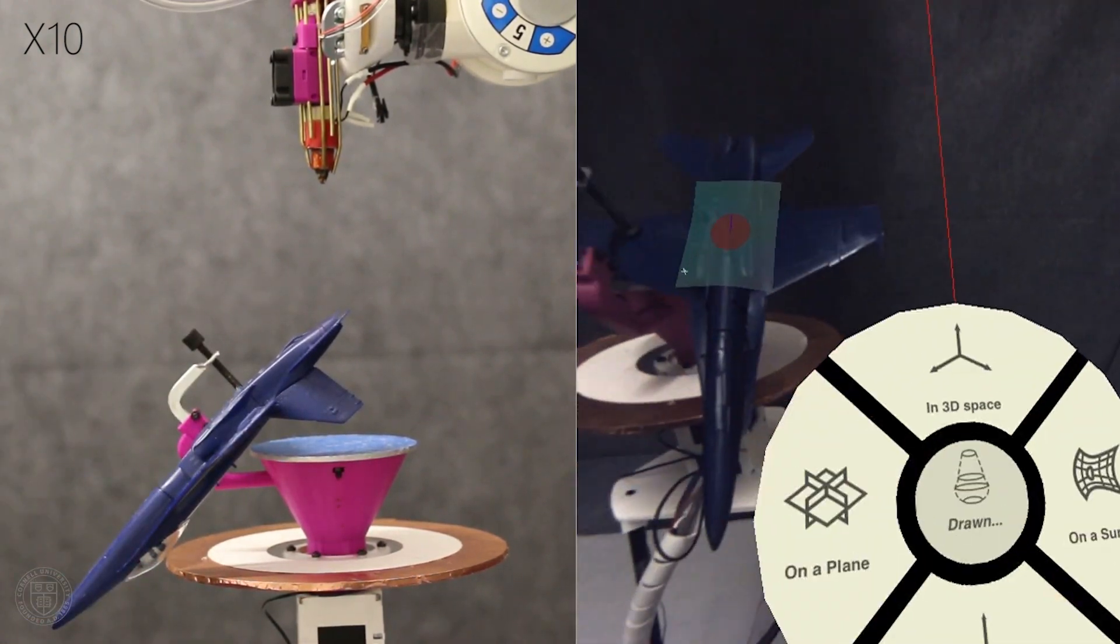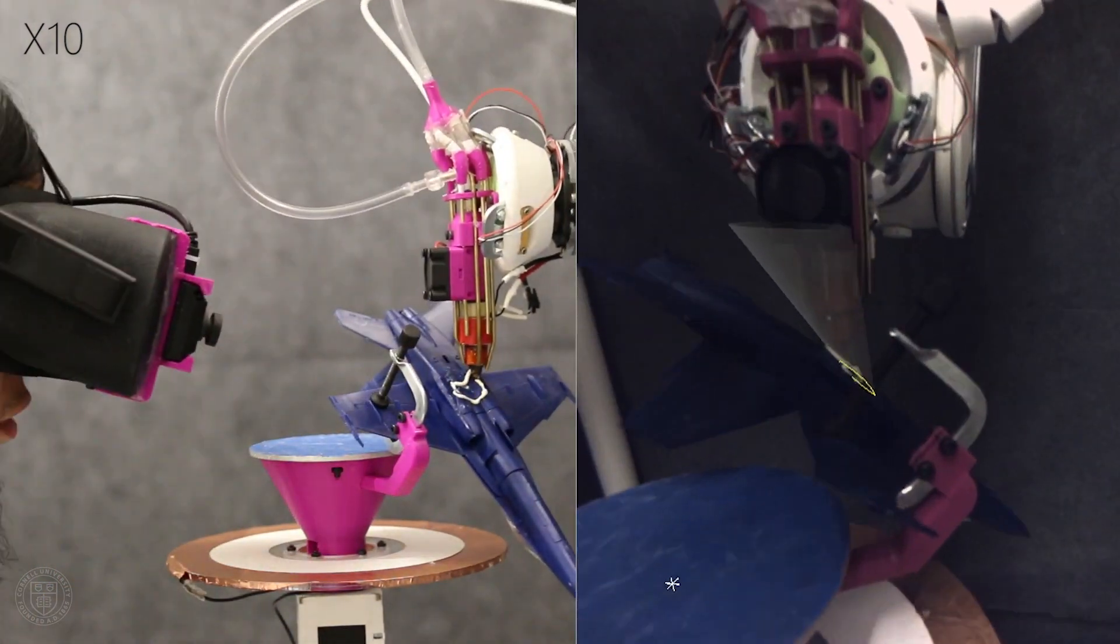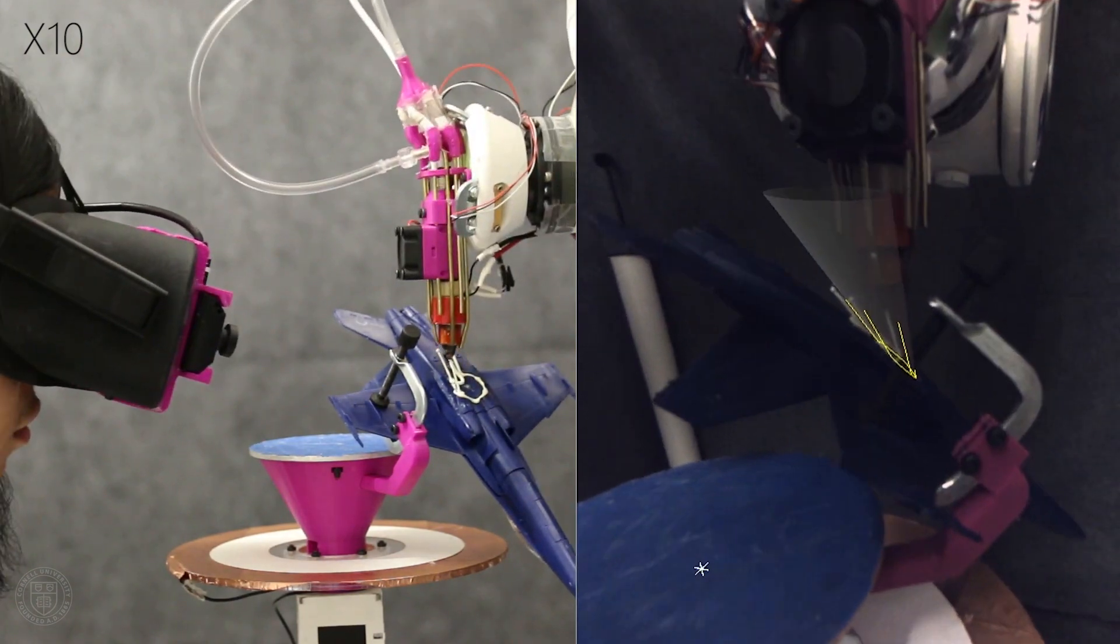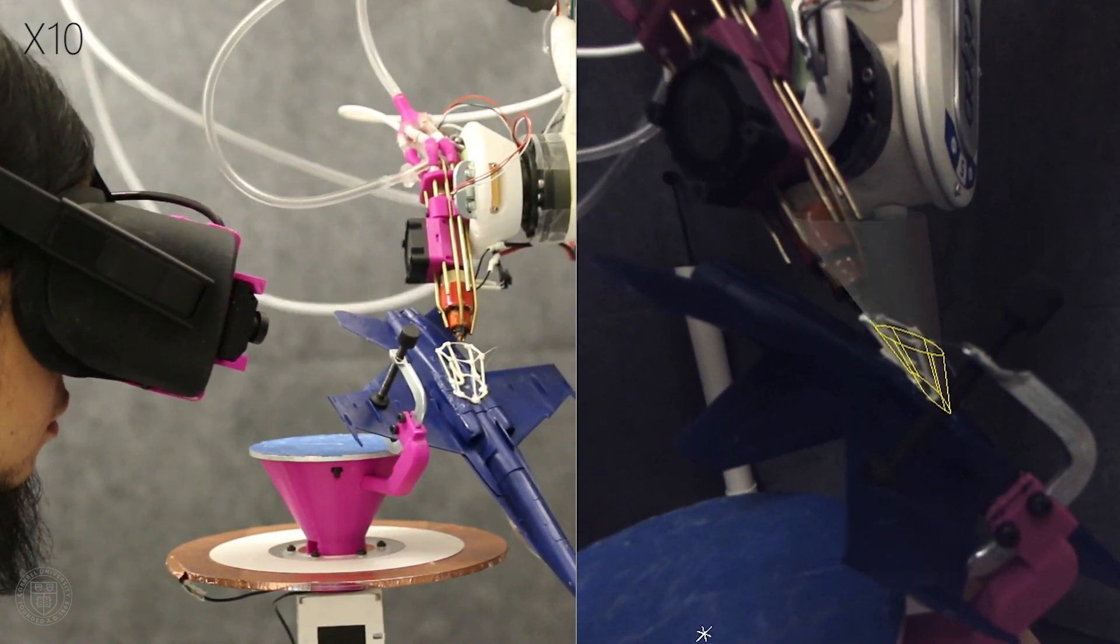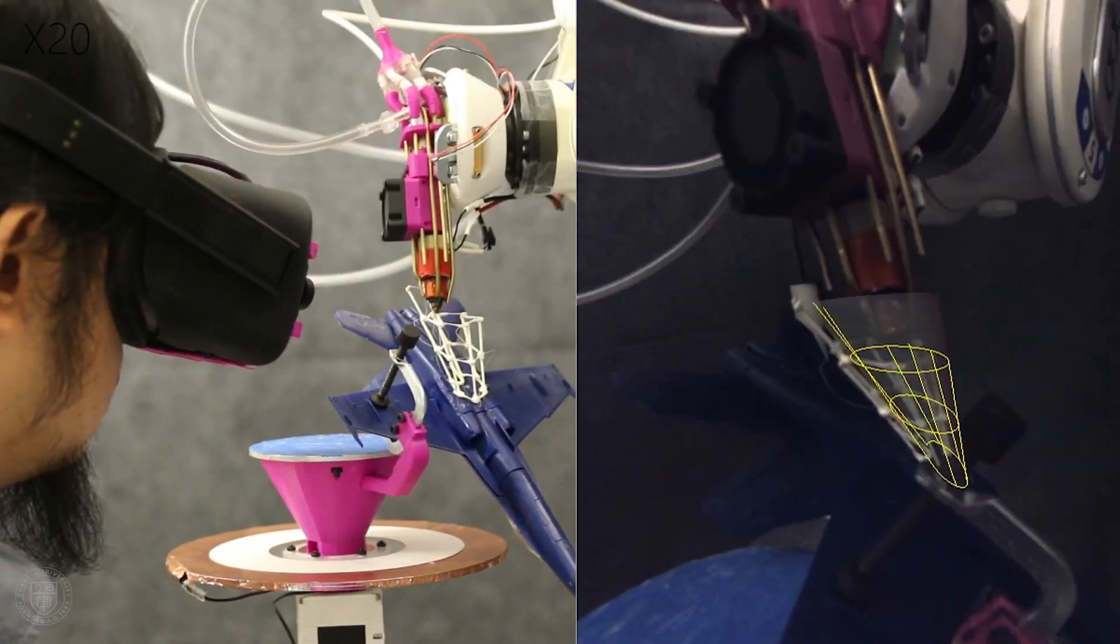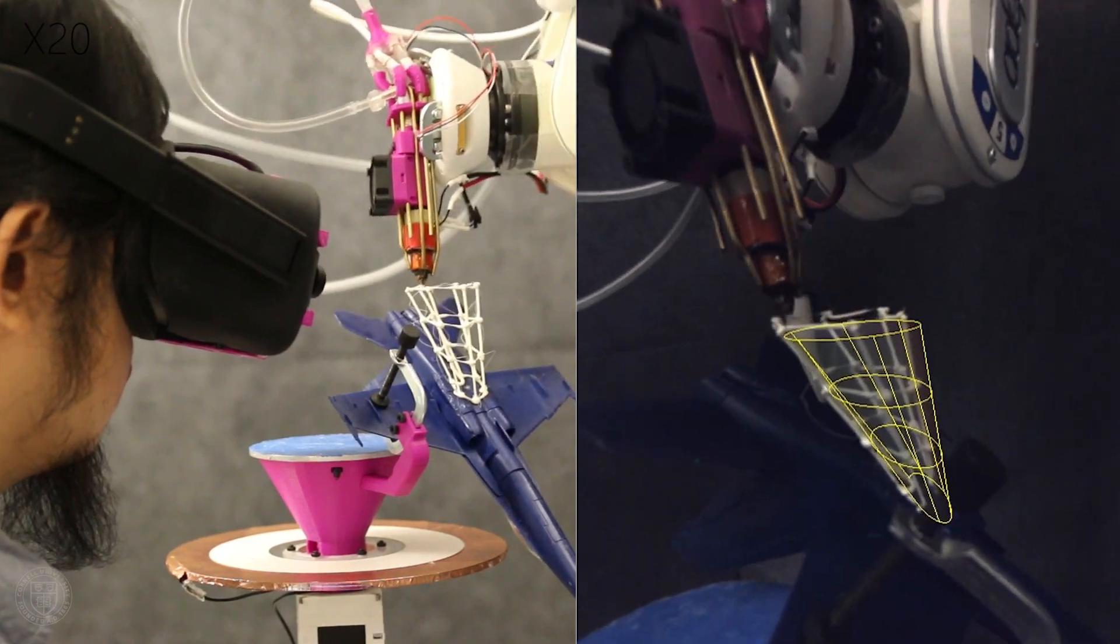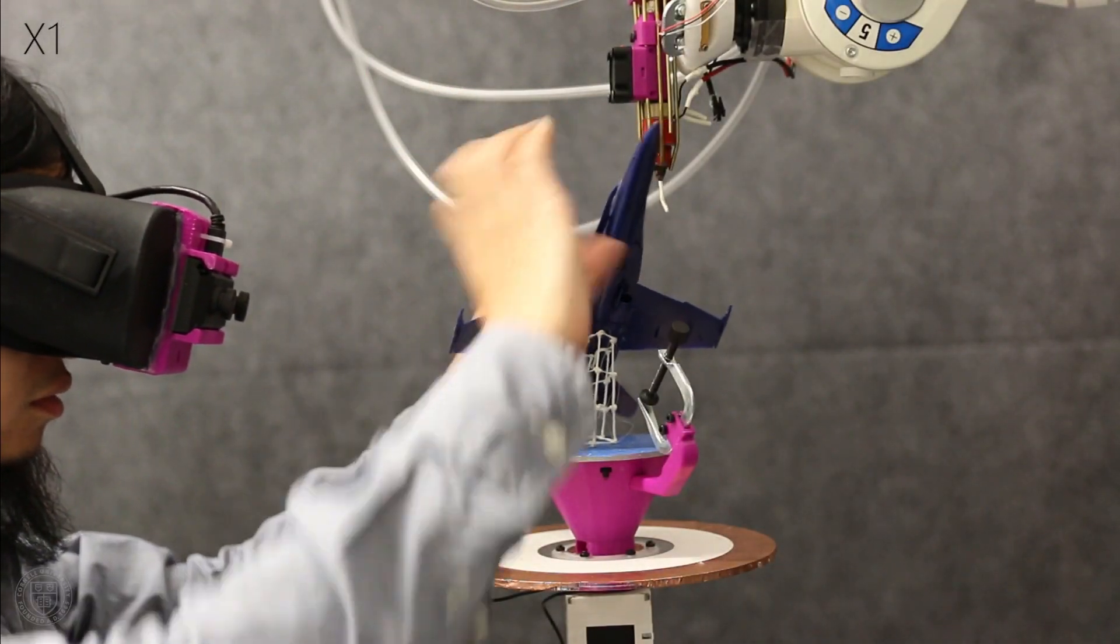Now the designer can design directly onto the fighter jet model. ROMA is accurate enough to print onto the existing physical object. With printing complete, the stand is ready for immediate evaluation.